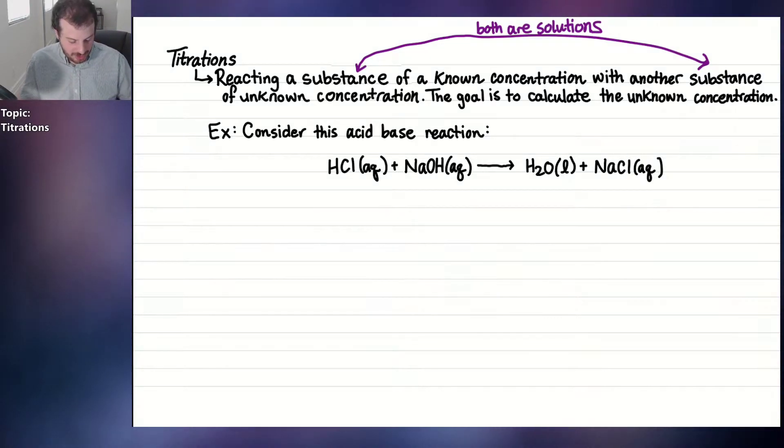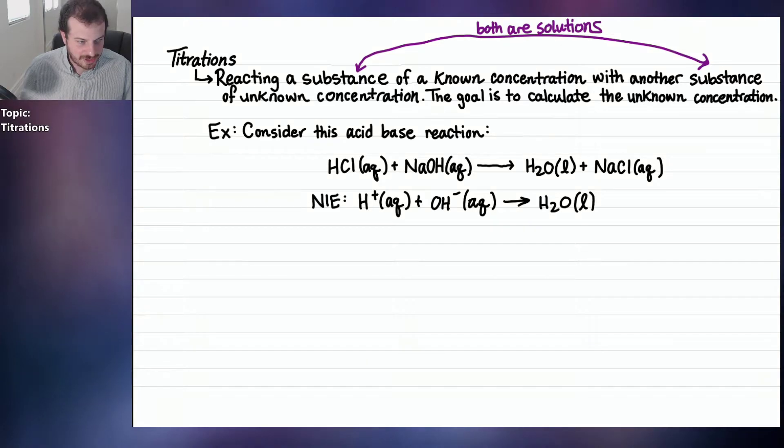So that's the balanced acid-base neutralization reaction. And if you go through and draw the net ionic equation, which I encourage you to do, you'll see that it looks like this: H+ aqueous plus OH- aqueous produces H2O liquid. The sodium and the chloride end up being spectator ions, so they cancel out and you're just left with H+ plus OH- produces H2O. So refresh your memory on how to write net ionic equations.